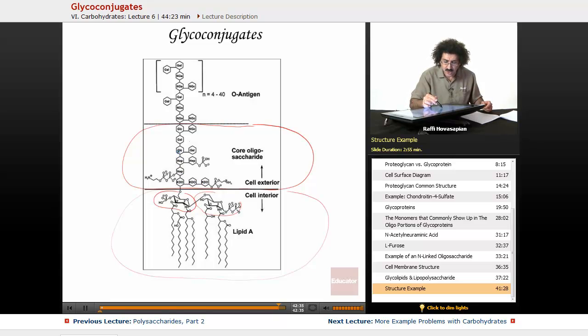This particular arrangement of oligosaccharide, this oligosaccharide right here, is always going to be the same. Don't worry, these are just different monomers - KDO, HEP - these are just different types of sugars with different things attached to them.